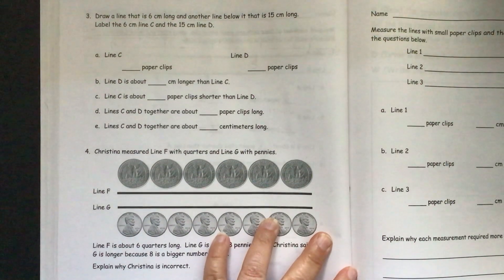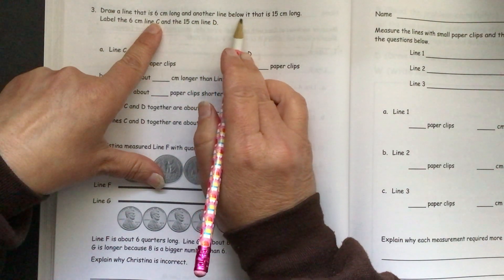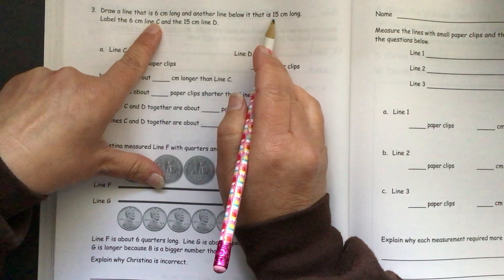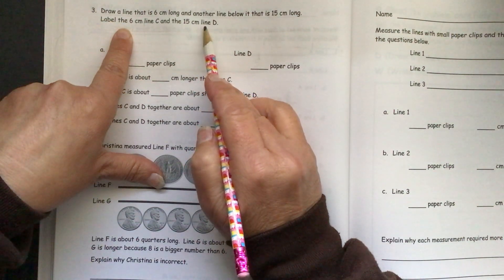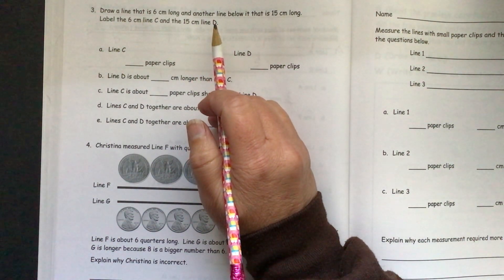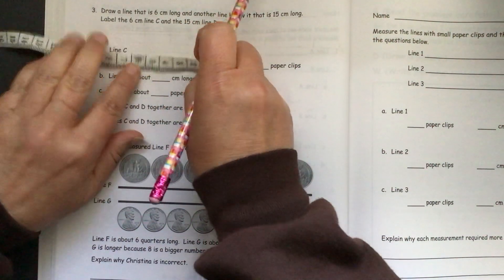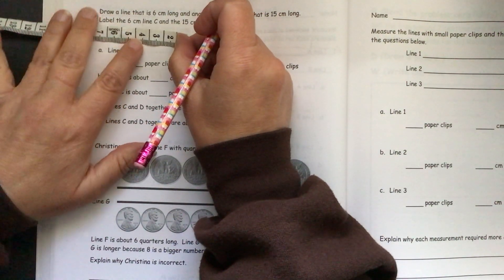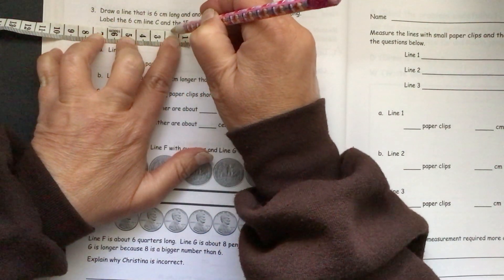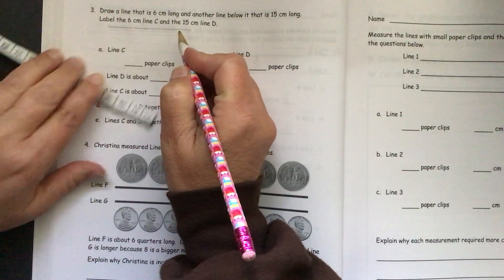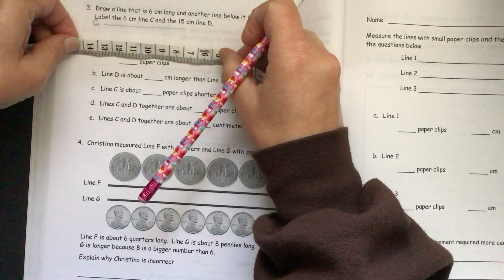It says draw a line that is six centimeters long and another line below it that is 15 centimeters long. Label the 6 cm line C. Label the 6 cm line C and 15 cm line D. So get my measuring tape here again. So the first one we want to have six centimeters long. And it says label that C. Now the next one they want 15 centimeters long.